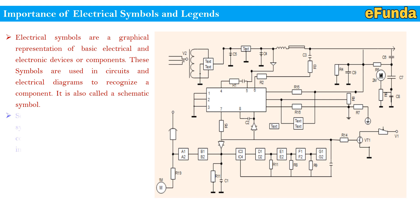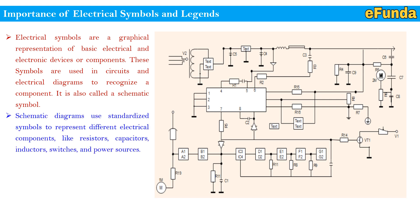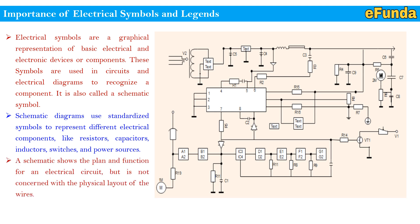Schematic diagrams use standardized symbols to represent different electrical components like resistors, capacitors, inductors, switches, and power sources. They are used both in designing and troubleshooting electrical circuits such as those in appliances, industrial machinery, or electronic devices. A schematic shows the plan and function for an electrical circuit but is not concerned with the physical layout of any of the wires.